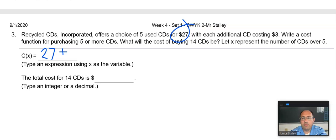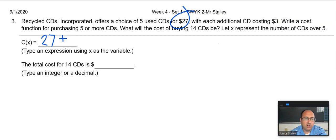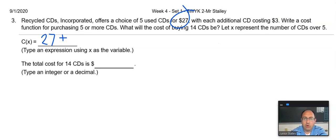Whoa. Alright. Now, not only are we, since we are talking about functions, we do want to throw in a story problem or two here. Recycled CDs Incorporated offers a choice of five used CDs for $27 with each additional CD costing $3. Write a cost function for purchasing five or more CDs.